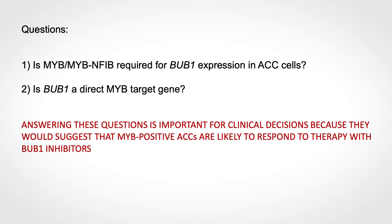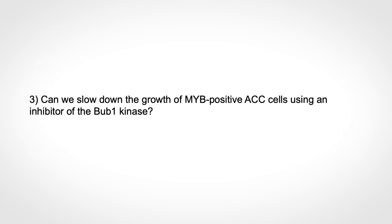We wanted to ask: first, is MIB or MIB-NFIB required for BAB1 expression in ACC cells? Second, is BAB1 a direct MIB target gene? Answering these questions is important for clinical decisions, as they suggest MIB-positive ACC tumors are likely to respond to a drug targeting BAB1. Most importantly, can we slow down the growth of MIB-positive ACC cells using a BAB1 kinase inhibitor?